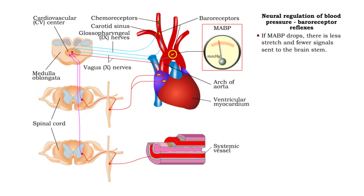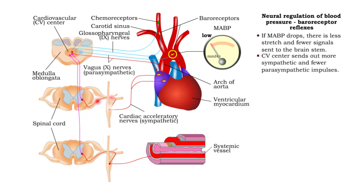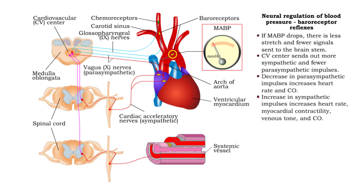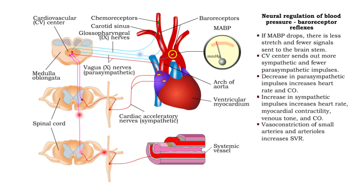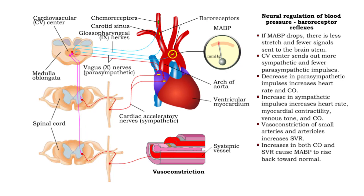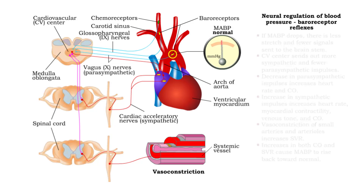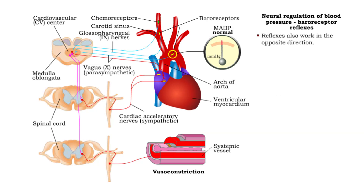If blood pressure drops, there is less stretch and fewer signals are sent to the brainstem. The cardiovascular center sends out more sympathetic and fewer parasympathetic impulses. This causes heart rate, myocardial contractility, venous tone, and cardiac output to all increase. Vasoconstriction of small arteries and arterioles causes systemic vascular resistance to increase, raising blood pressure back toward normal.